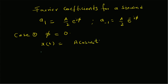When φ = 0, the corresponding Fourier coefficients are a₁ = A/2 because e^(j·0) = 1, and similarly a₋₁ = A/2 as well. Both coefficients are real and equal.